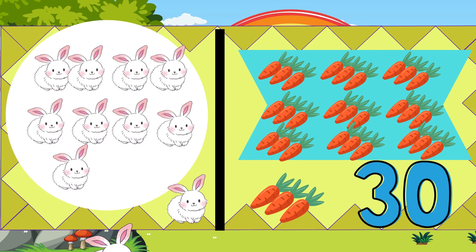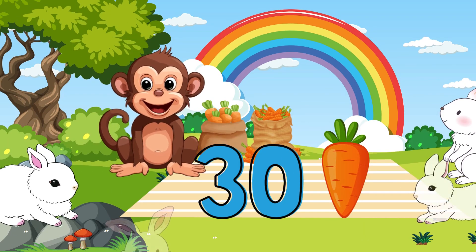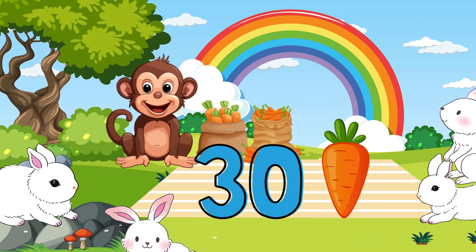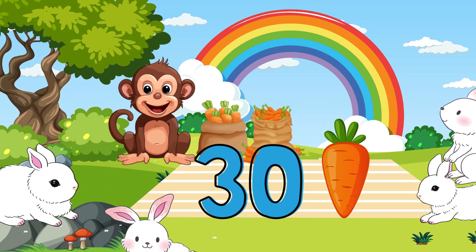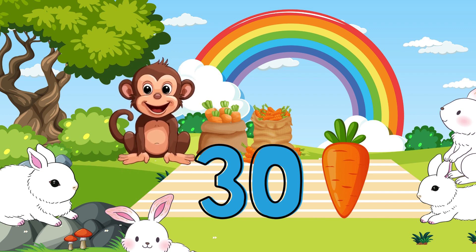The tenth rabbit gets 3 carrots. So adding 3 more to 27 gives us a total of 30 carrots. Chiku monkey has totally sold 30 carrots to 10 rabbits. To help Chiku, we counted in groups of 3.